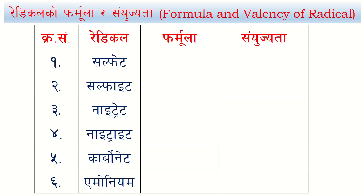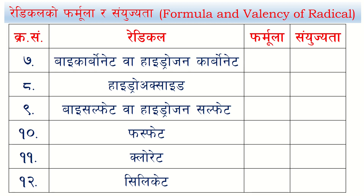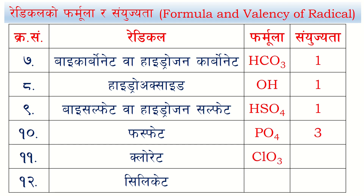Now we need to know the radical formulas. Sulfate (SO4) valency 2; sulfite (SO3) valency 2; nitrate (NO3) valency 1; carbonate (CO3) valency 2; ammonium (NH4) valency 1; phosphate (PO4) valency 3; hydrogen carbonate (HCO3) valency 1; bisulfate / hydrogen sulfate (HSO4) valency 1; chlorate (ClO3) valency 1; silicate (SiO3) valency 2.